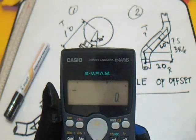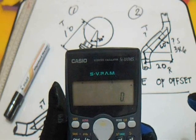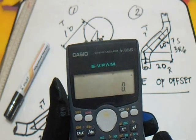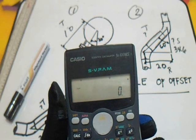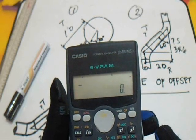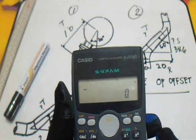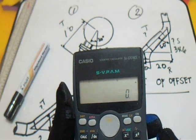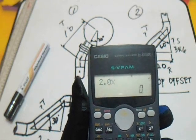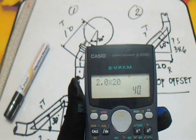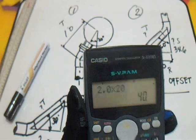Now let's find the travel. The formula uses 60 degrees — cosecant of 60 degrees — multiplied by 20. That answer is 40.